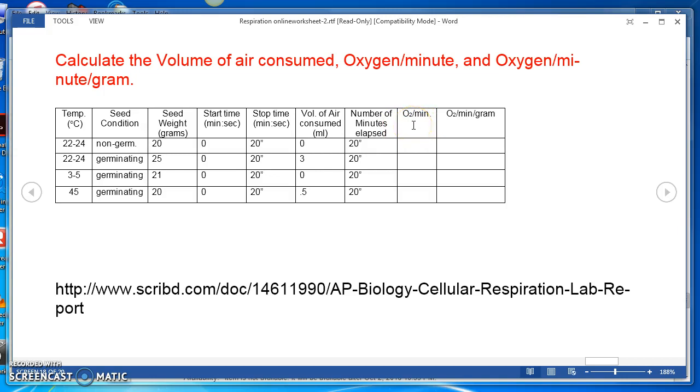So you will divide the volume of air by minutes elapsed. And then to get this last column, you'll take the oxygen per minute and divide it by grams. You'll get the grams over here. You'll be able to complete the table and send that also.